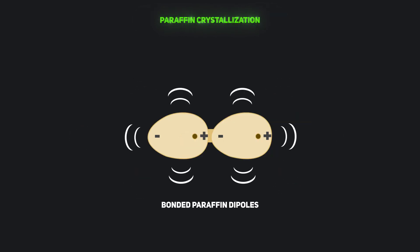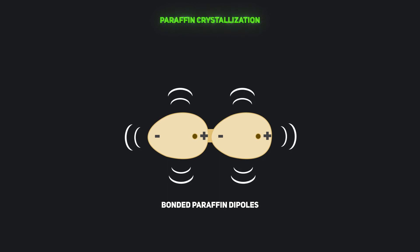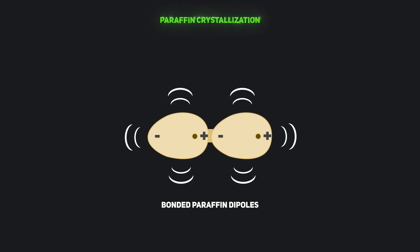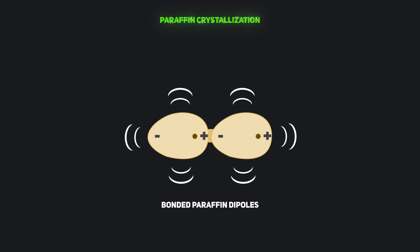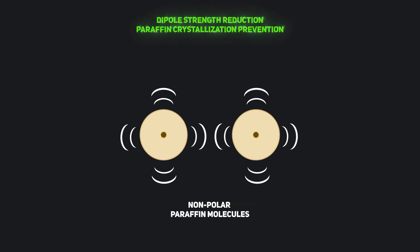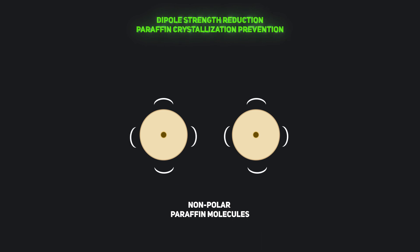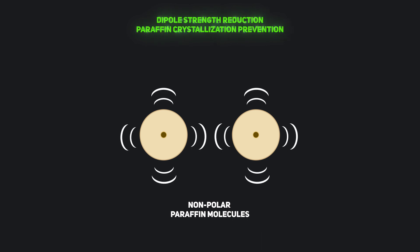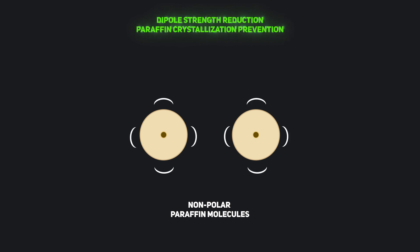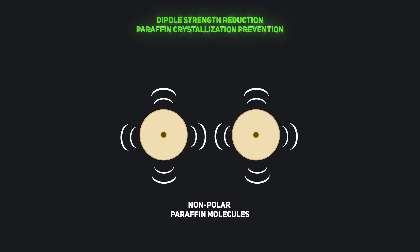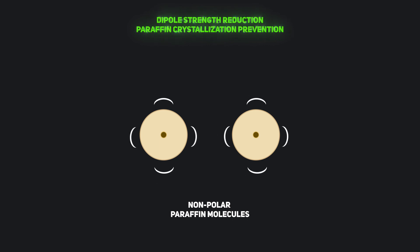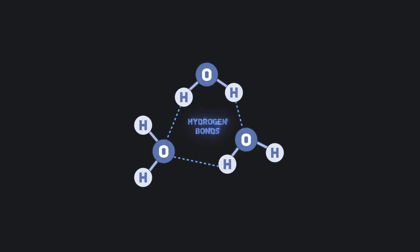As oil enters and rises in a well, the decreasing temperature will cause the vibration of paraffin molecules to decrease. As the vibrations decrease, the distance between the dipolar paraffin molecules will decrease, until the London dispersion forces bond the molecules together, causing the paraffin to crystallize. Enercat's emitted frequency increases paraffin electron cloud symmetry at the quantum fluctuation level, decreasing the strength of paraffin's dipoles, which makes the molecules less polar or nonpolar, thereby preventing paraffin crystallization as temperature decreases.